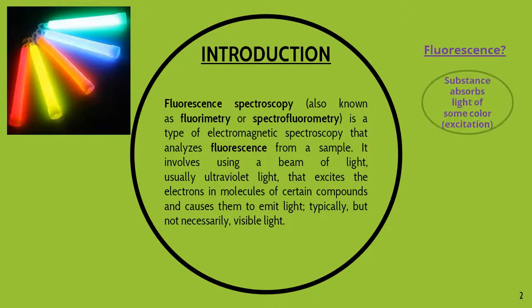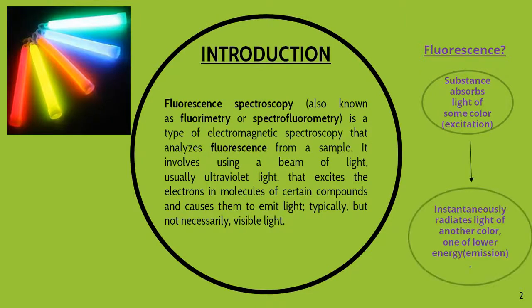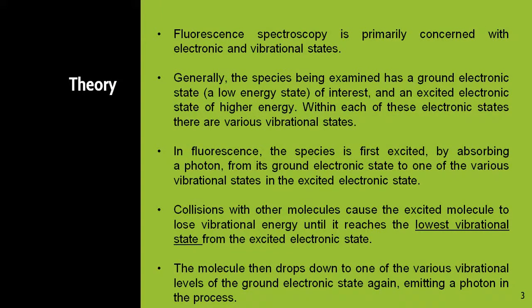This technique basically involves a beam of light, usually ultraviolet light, that is radiations ranging from 200 to 400 nanometers, that excites the electrons in molecules of certain compounds. Substances absorb light of some color, generally referred to as excitation, then they instantaneously radiate light of another color of lower energy, and this is known as emission. Fluorescence spectroscopy is primarily concerned with the electronic and vibrational states. Generally, the species being examined has a ground electronic state of lower energy and an excited electronic state of higher energy.